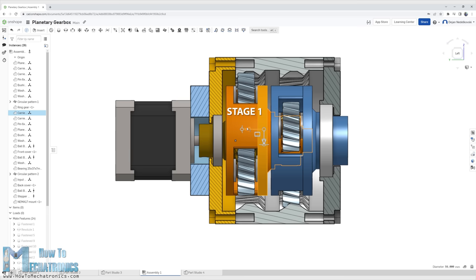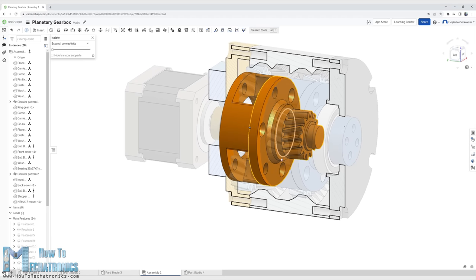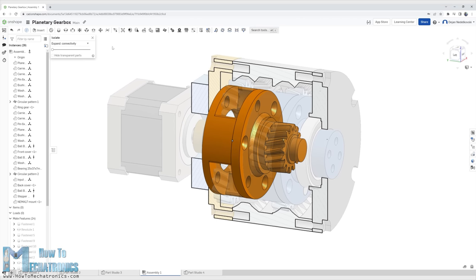That means two planetary gear sets connected in series. The output of the first planetary gear set is the input of the second planetary gear set. The final ratio of the gearbox is the product of the two gear sets ratios.